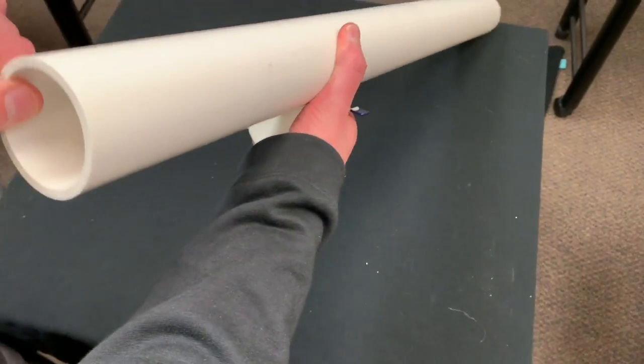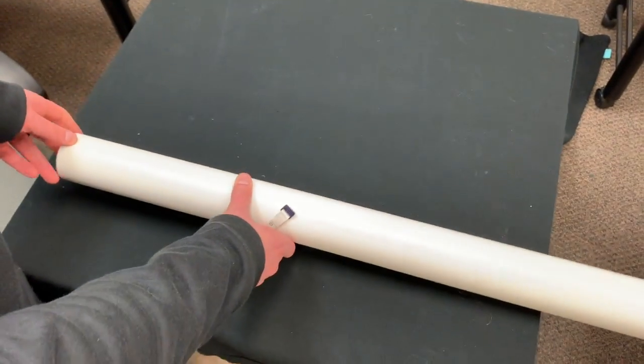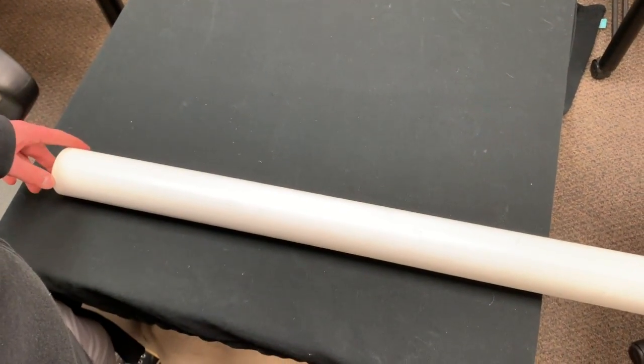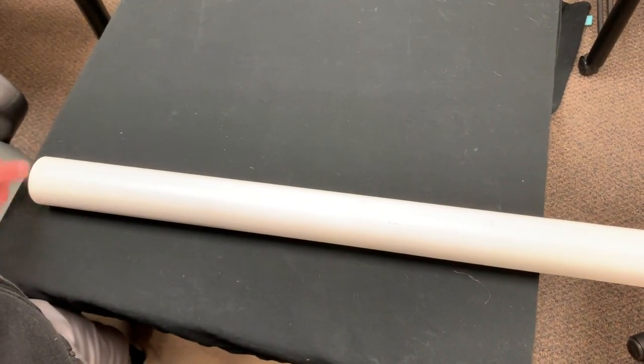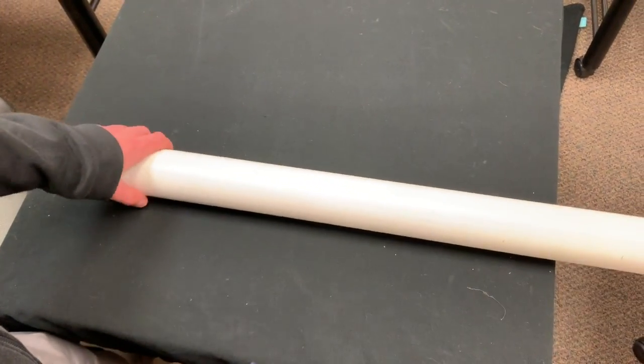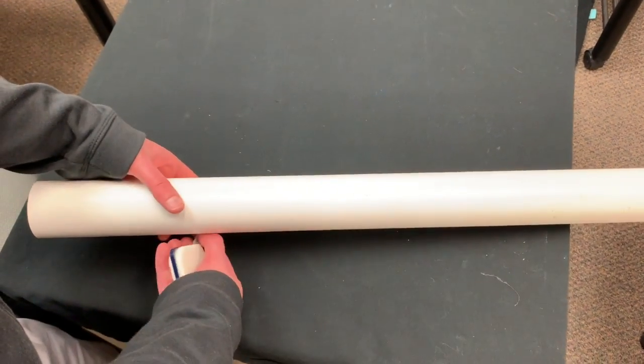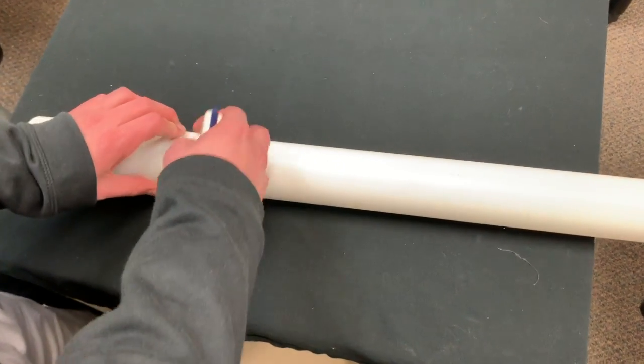So here we have a piece of pipe, this is schedule 80 two inch diameter pipe. Your main line may not be nearly this big, it might be more like one inch or one and a half inch, but the way to find it is basically you just need to take the circumference of the pipe.